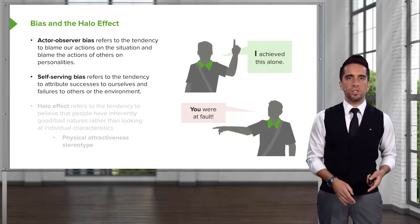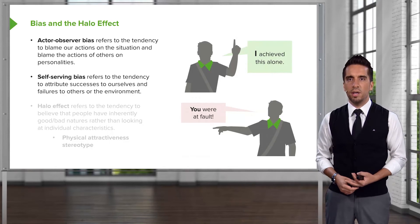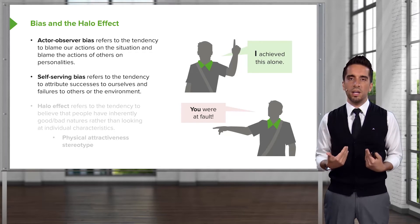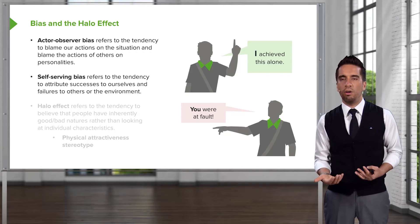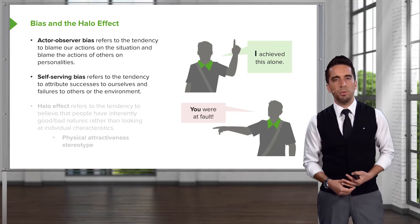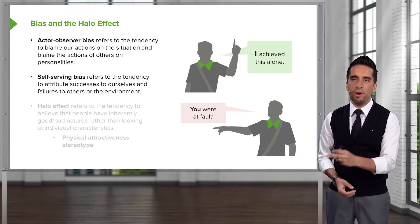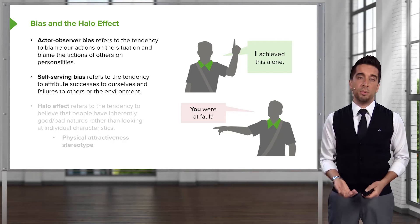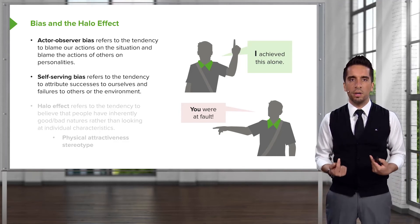Self-serving bias refers to the tendency to attribute success to ourselves and failures to others or the environment. So if you do amazing on the MCAT, you say, 'I did this — I studied, I'm intelligent.' But if things don't work out, you blame others: 'I didn't pass because you didn't bring my magic pencil, and that guy kept snoring during the exam.' It could be that maybe you didn't study hard enough, but you're going to blame it on the environment and people around you.